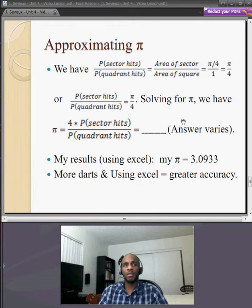I want you to basically answer that result, what is pi, given your sector hits and your quadrant hits. And I want you, of course, to explain the answer.